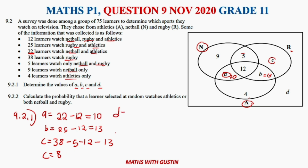Value d refers to the learners watching nothing at all. The total is 75 learners minus all those watching something within the Venn diagram. Adding up all values inside the diagram gives 61, so d equals 75 minus 61, meaning d = 14. These 14 learners watch neither netball, rugby, nor athletics.